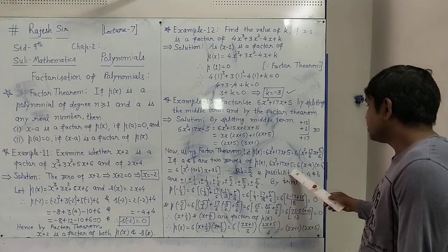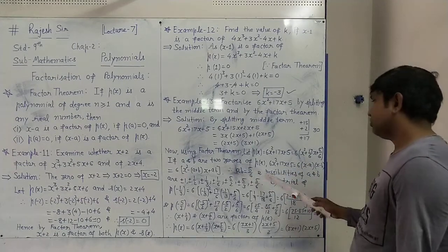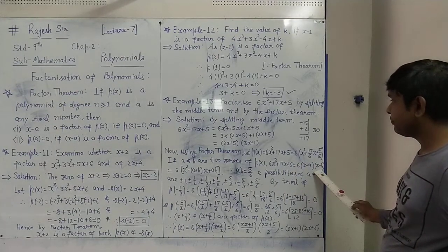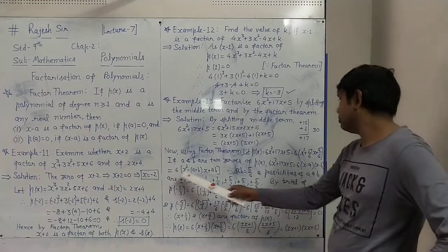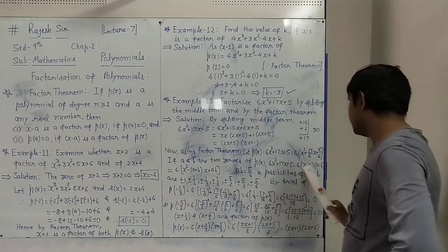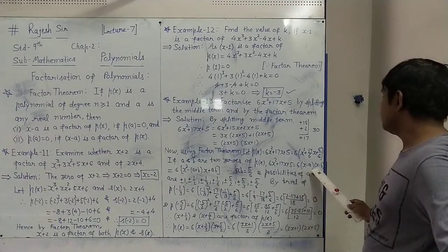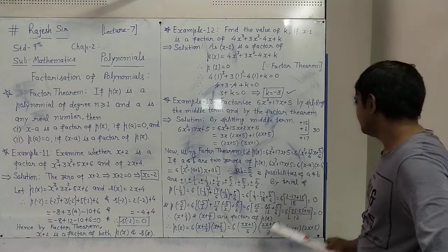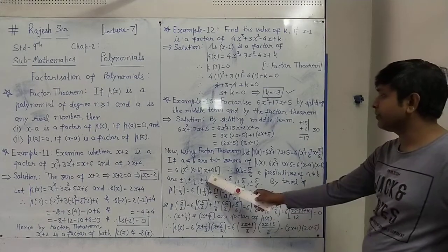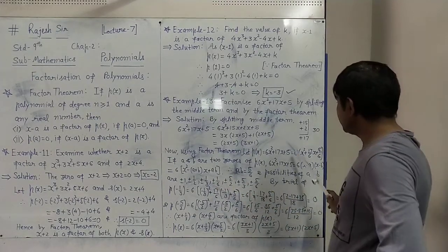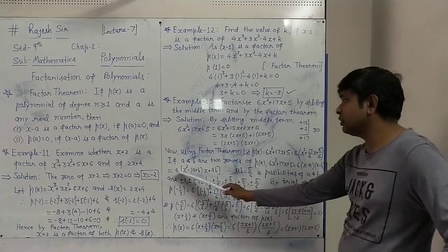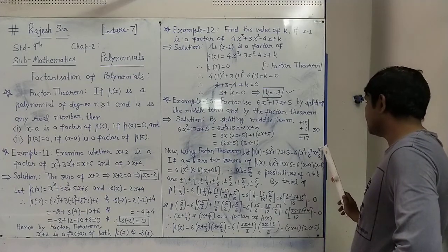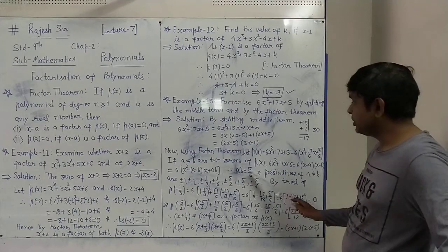Expanding 6(x minus a)(x minus b): it gives 6 times x squared minus (a plus b)x plus ab. Comparing with 6 times (x squared plus 17/6 x plus 5/6), the constant term ab equals 5 by 6. So the possible values of a and b must multiply to give 5 by 6.